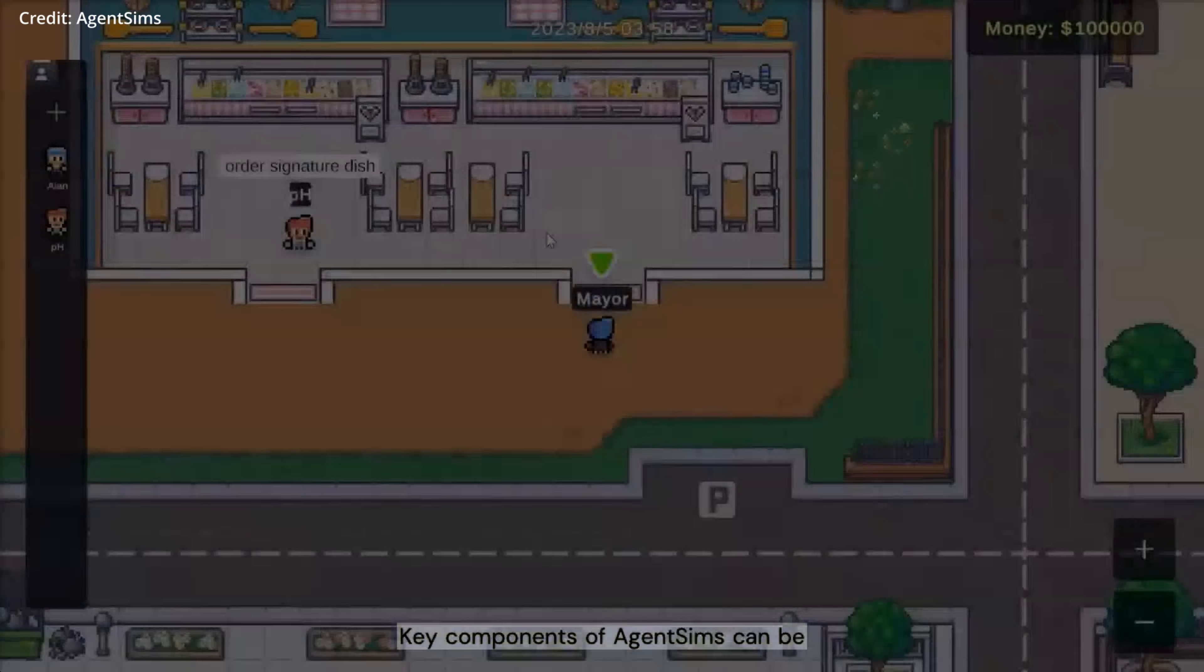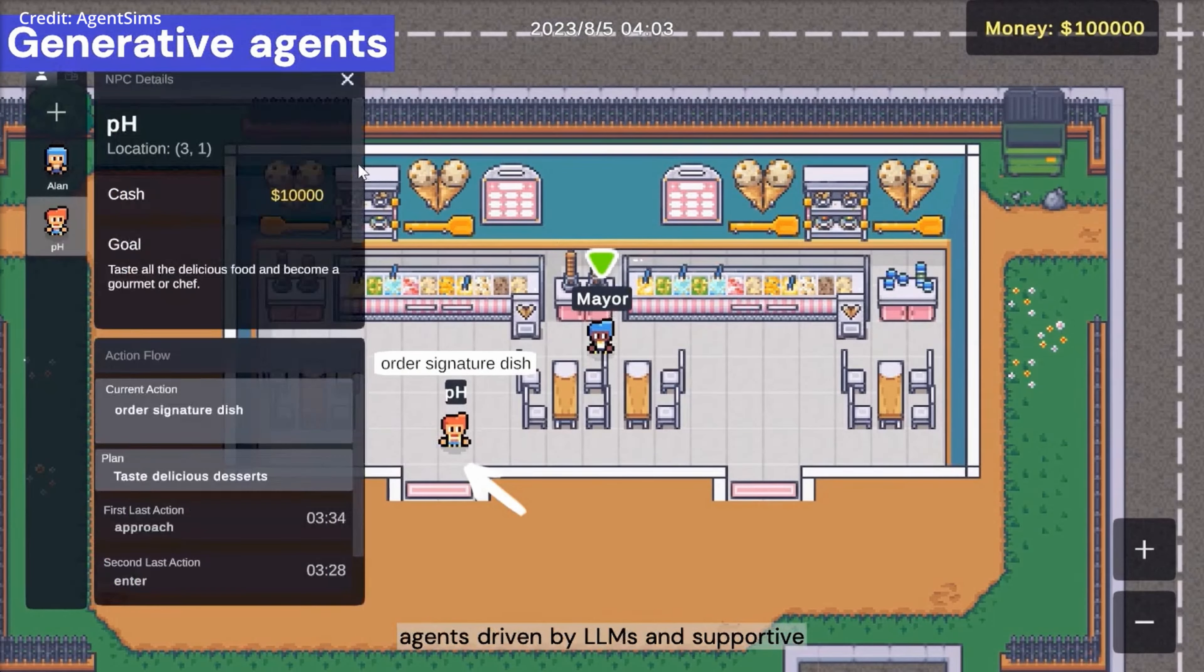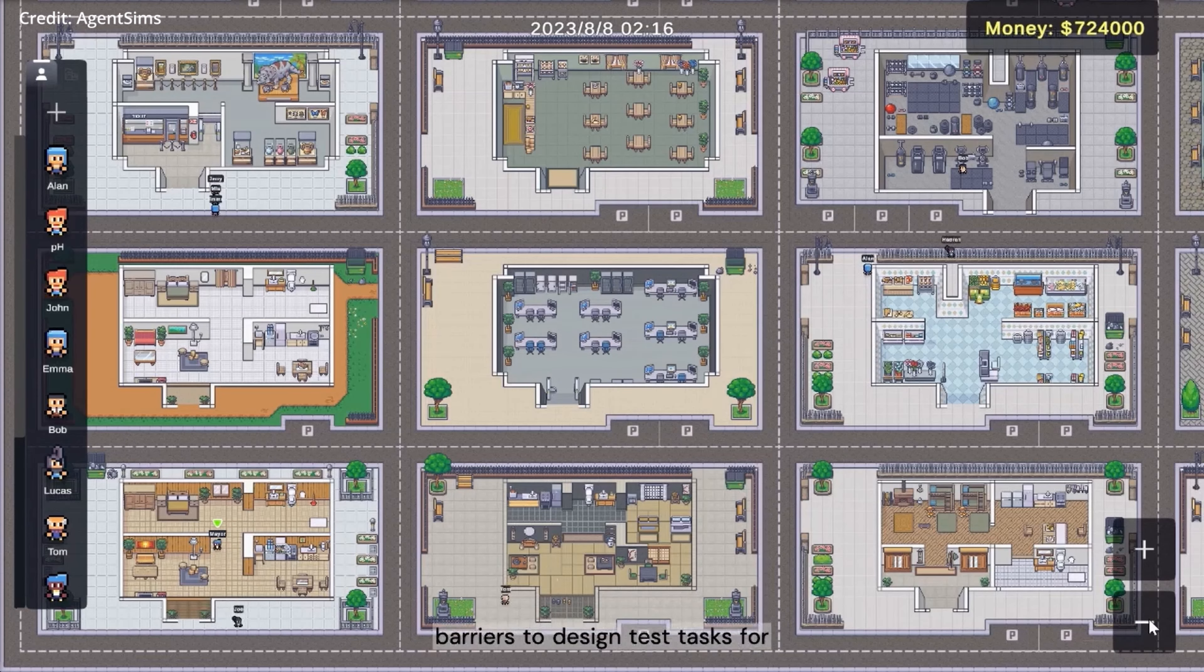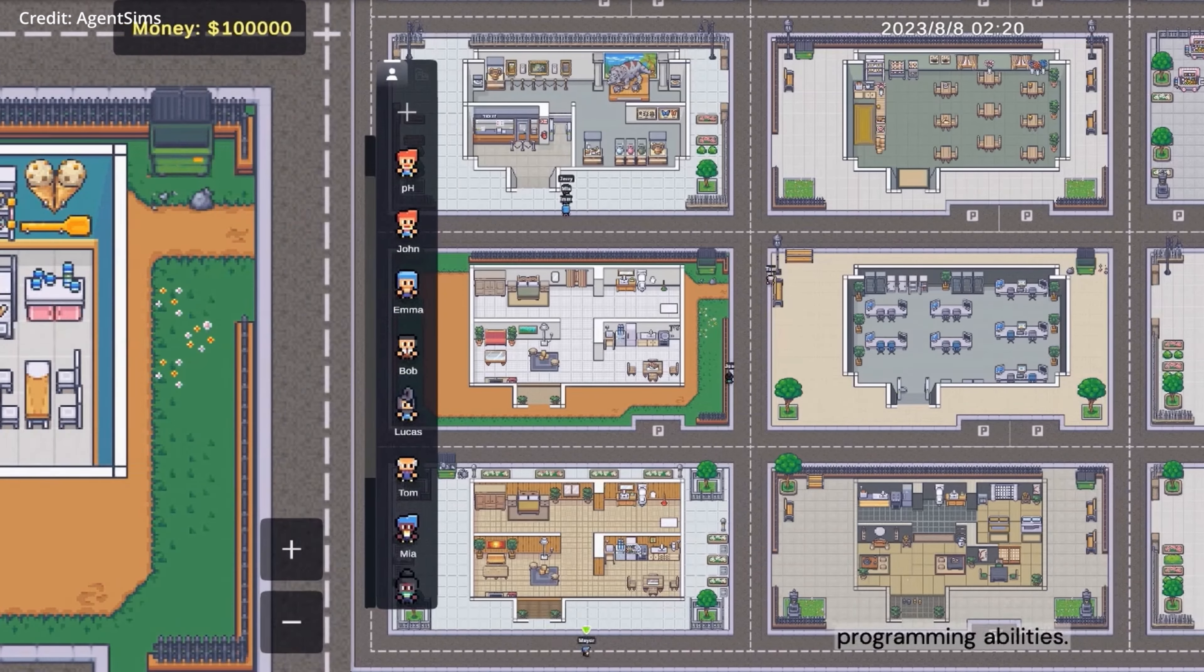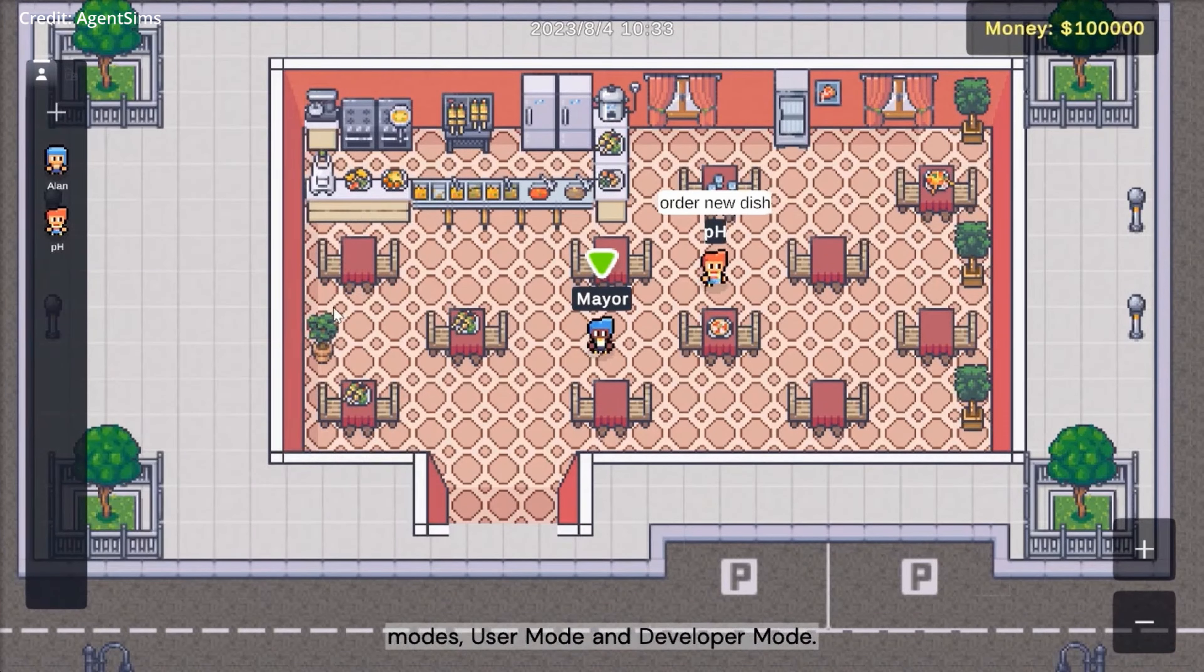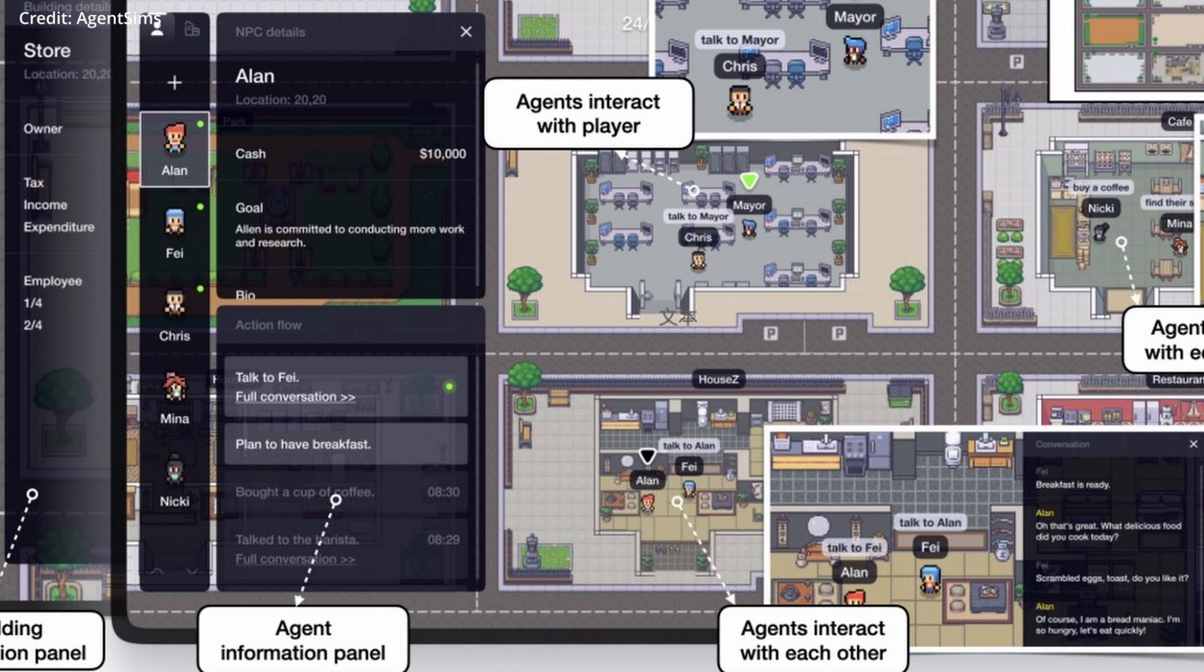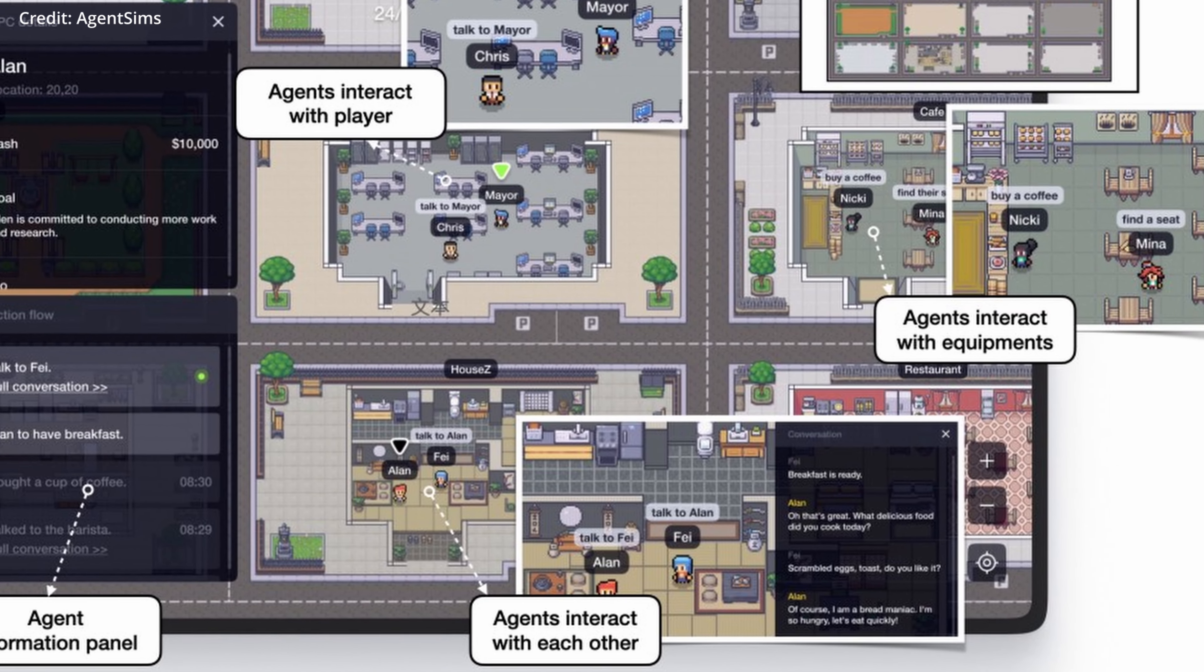Agent Sims tackles these limitations by providing a user-friendly interface that streamlines the task design process. The architecture is designed to remove barriers for researchers with varying levels of programming expertise, making it accessible to specialists in diverse fields, from behavioral economics to social psychology. By offering features like map generation and agent management, Agent Sims empowers researchers to create environments and design evaluation tasks easily, without requiring extensive technical knowledge.